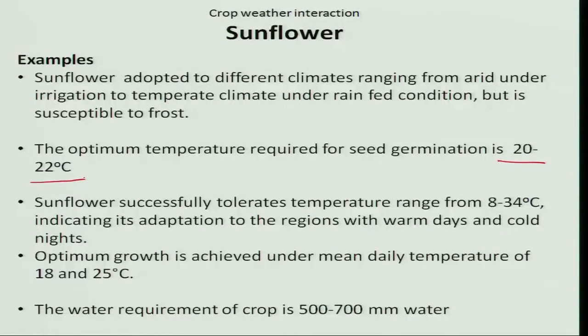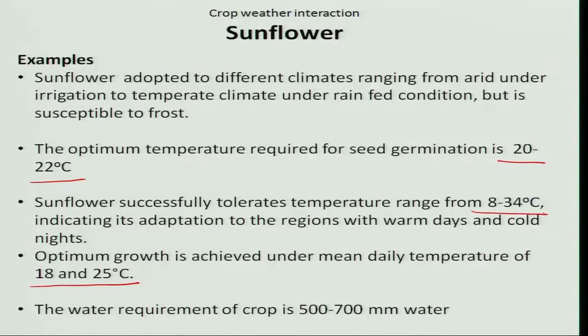Let us see the crop-weather interaction during the germination phase. It requires an optimum temperature of 20 to 22 degrees Celsius for seed germination. Sunflower is also highly susceptible to frost. The optimum temperature required during the vegetative stage is 18 to 25 degrees Celsius. However, it can adapt under warm situations as well, with a temperature range of 18 to 34 degrees Celsius.